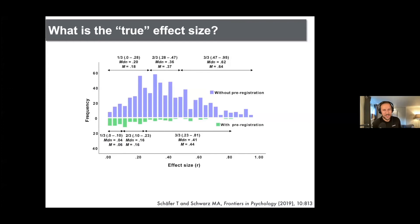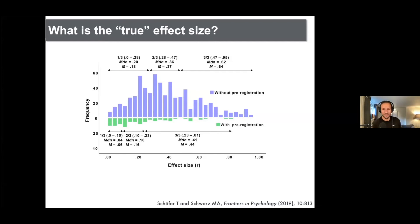Publication bias and effect size inflation is a massive issue in the biobehavioral sciences. Here's a great visualization which shows on the top the studies which don't have pre-registration and the effect sizes that you find. Magically, once studies begin getting pre-registered, they shrink, because when you actually pre-register your studies you're reducing analytical flexibility. Once you reduce analytical flexibility, your ability to use questionable research practices to get your study across that magical 0.05 threshold is reduced. So a lot of the effect sizes we're reporting are inflated, and this has implications for meta-analysis.